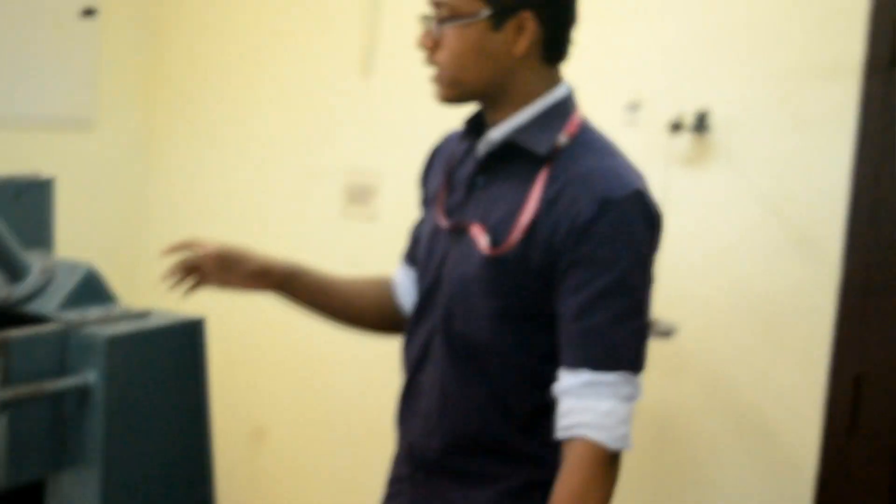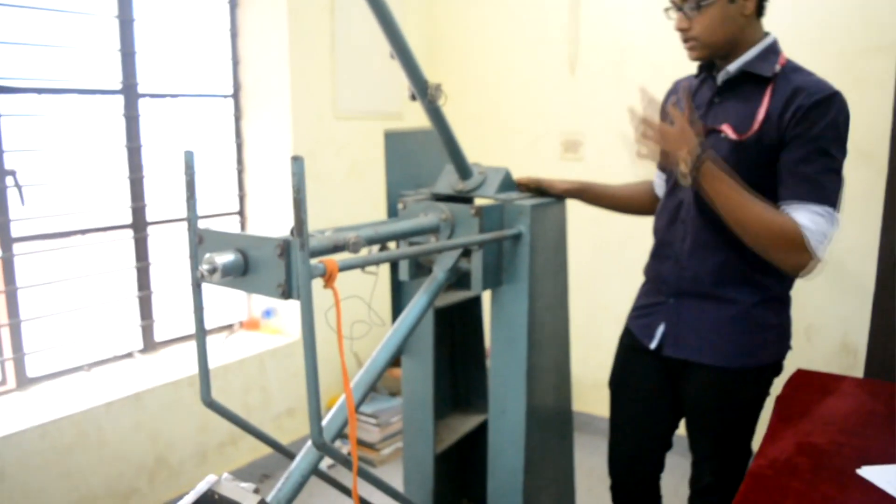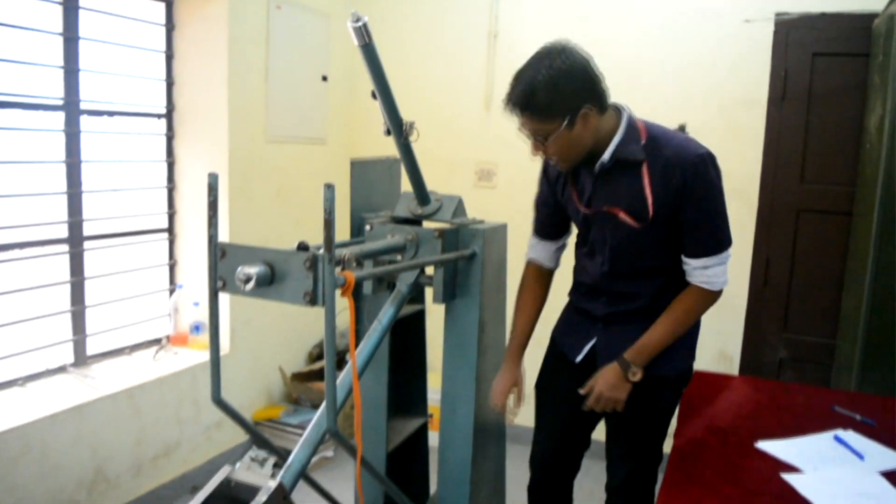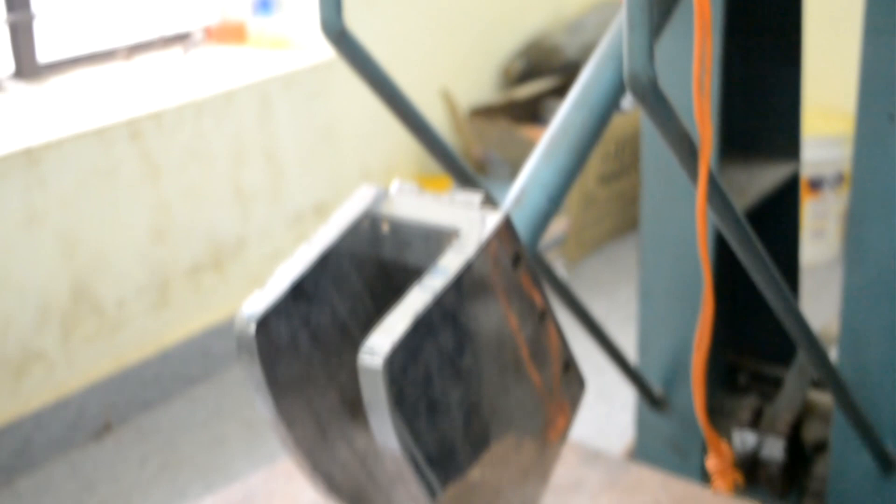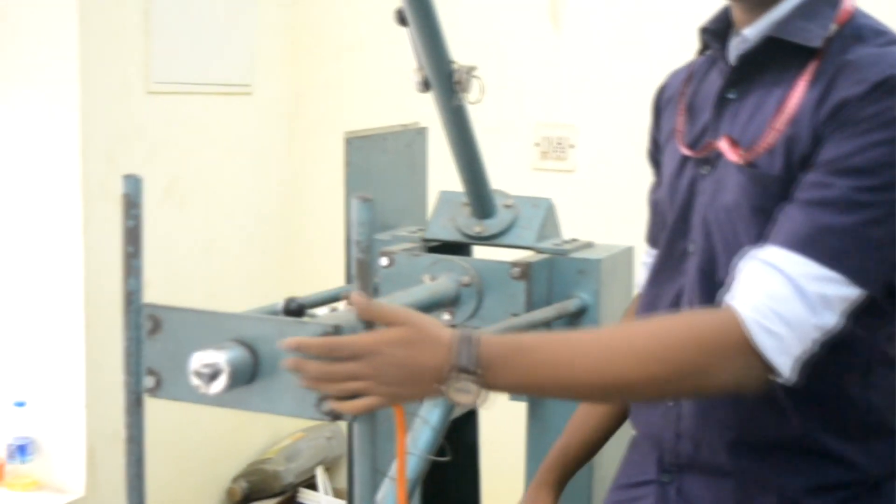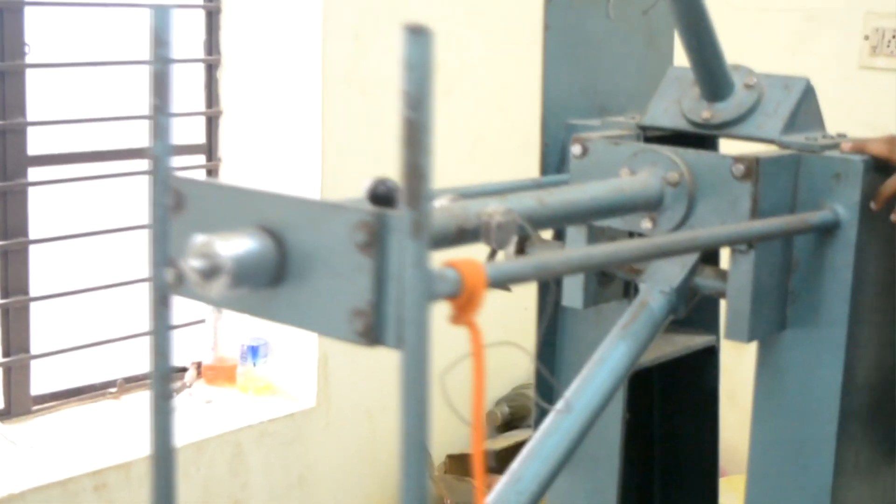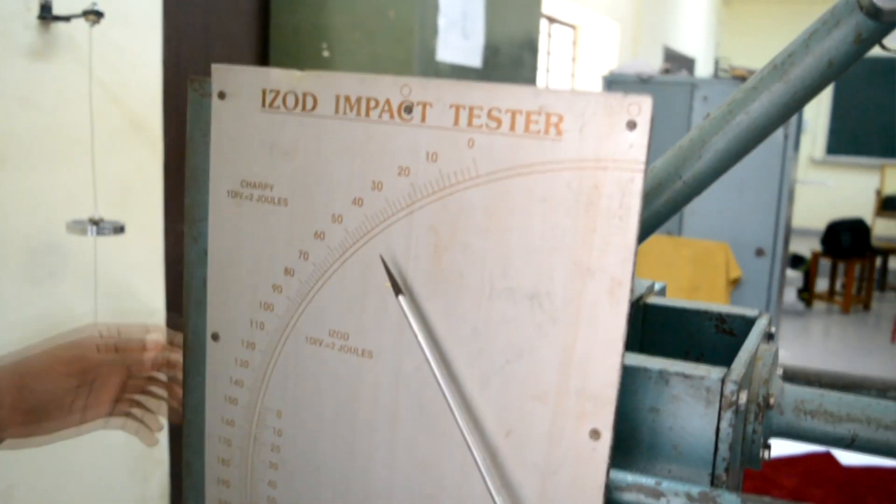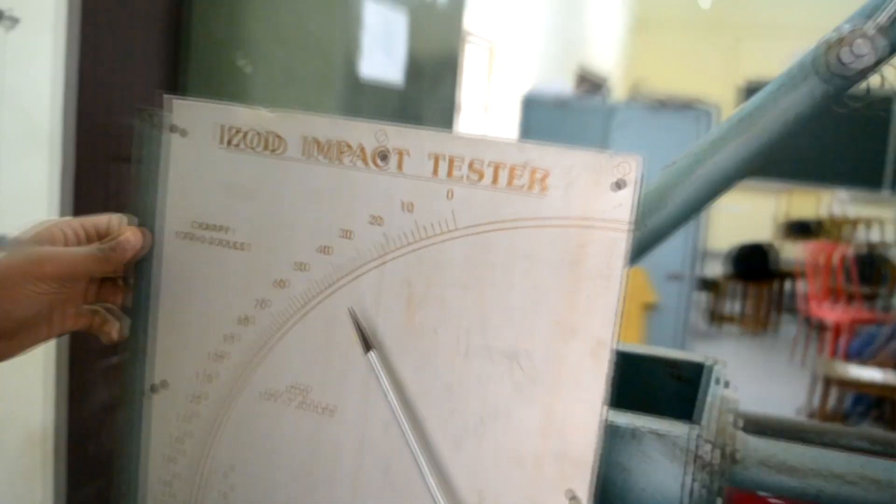The machine that is used for impact testing is this. The specimen which the pendulum will strike will be held at the vice. This tool is used to adjust the position of the specimen. And this is the pendulum which will strike the specimen. The pendulum will be kept initially at an angle 85 degrees and will be released. This is the dial in which the final angle can be seen.